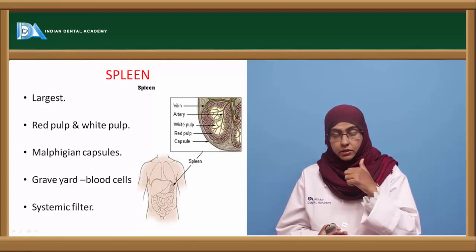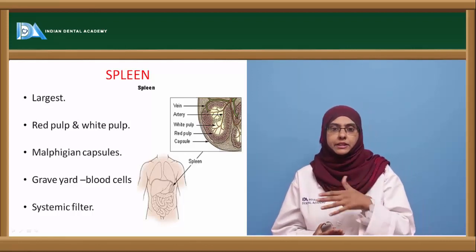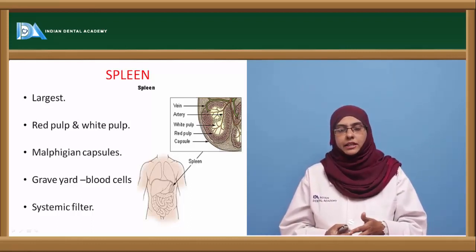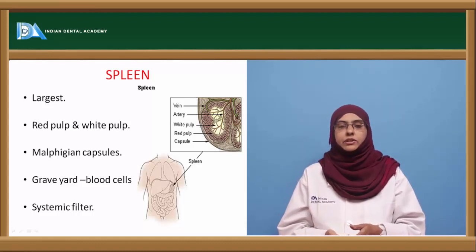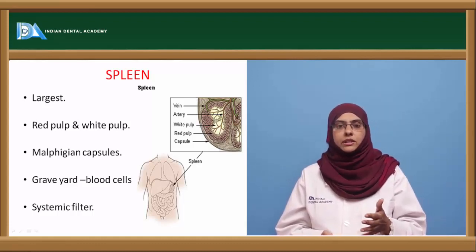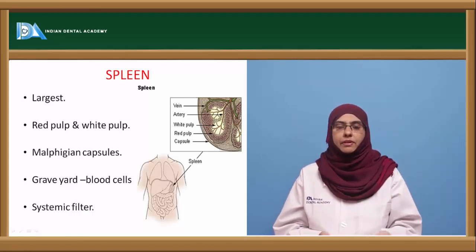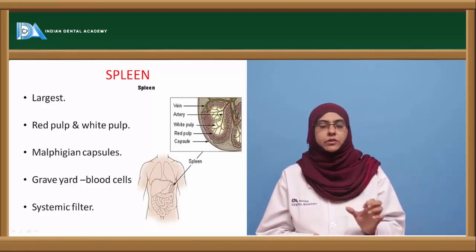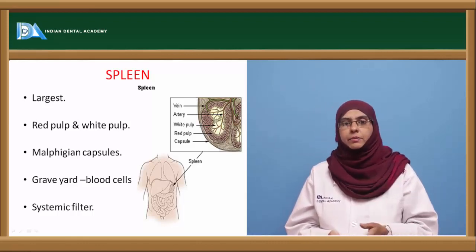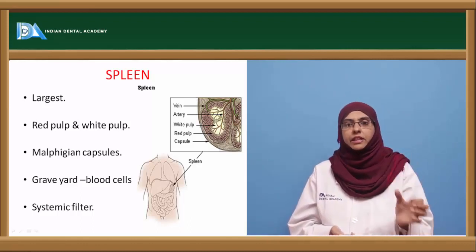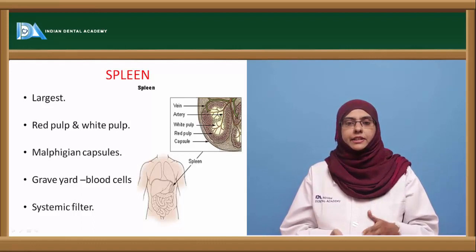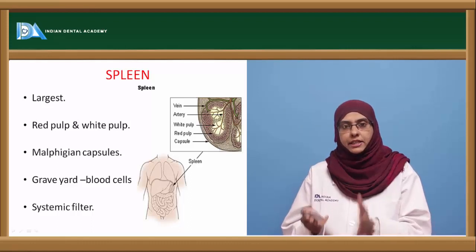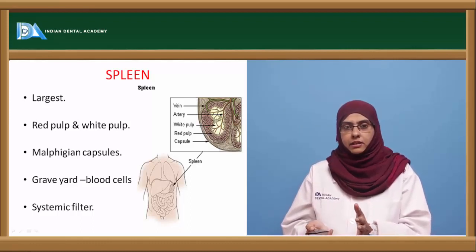Antigens entering through the blood are taken directly to the spleen, where interaction of lymphocytes with the antigen occurs in the periarteriolar lymphoid sheath. The spleen acts as a systemic filter to remove blood-borne pathogens. Between the red pulp and white pulp there is a marginal zone rich in T lymphocytes along with interdigitating dendritic cells that present the antigen to T cells to mount an immune response.